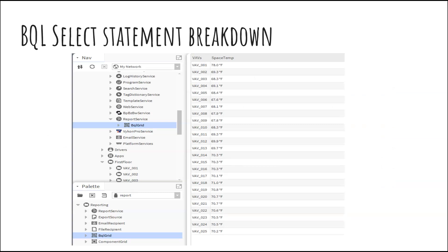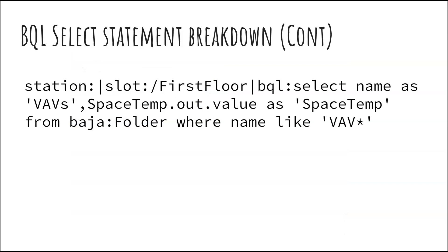So after I put in a specific statement, let's look at a breakdown. With this BQL query, I wanted to look for my VAVs and put the space temp next to them in a grid. So I typed in station:slot for the first floor — I hit Control+L and then created a BQL select to show the VAVs and the space temp value.